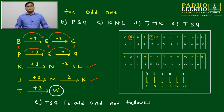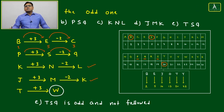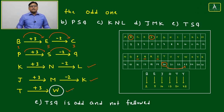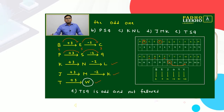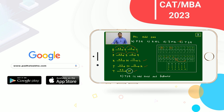But the last option, TSQ — after T, if you add 3, ideally it should give W, but in the option it is S. Due to this, TSQ is not following the pattern. So TSQ is the odd one out.